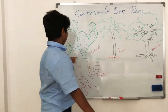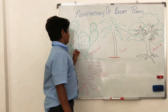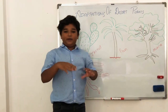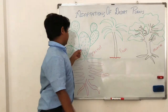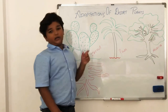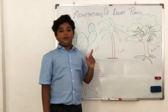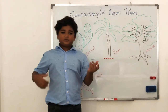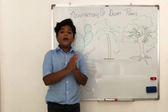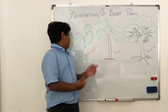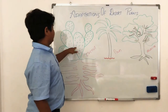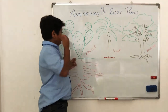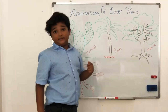The second fact about a cactus is that it has a waxy coating on it. Unlike other plants, which don't have a waxy coating — only a cactus has a waxy coating.